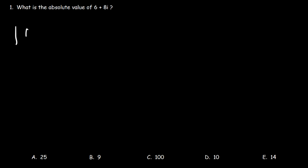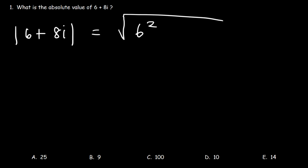Number one: what is the absolute value of 6 plus 8i? The absolute value of 6 plus 8i is equal to the square root of 6 squared plus 8 squared.